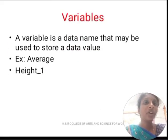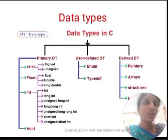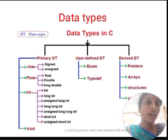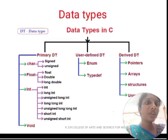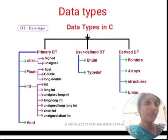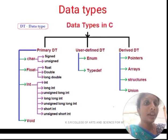Next, we are going to see about variables. A variable is a data name that may be used to store a data value. For example, 'average' is a variable name. Next, we are going to see about data types. A data type is used to specify what type of values we can give to a variable. Data types are divided into three types: primary data type, user-defined data type, and derived data type. Primary data types are further classified into character, float, int, and void. User-defined data types are classified into enum and typedef. Derived data types are classified into pointers, array, structures, and union.